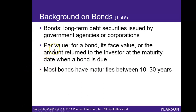Bonds have what is known as a par value, which is the face value of the bond or the amount returned to the investor at the maturity date — when a bond is due. For example, a bond may have a par value of $1,000, which means when the bond matures, the bond holder will receive $1,000.